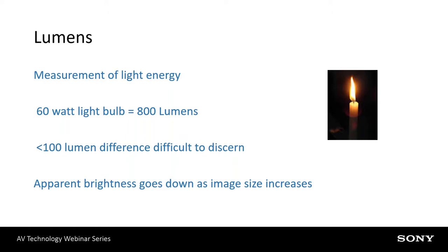Something to keep in mind when deciding what's the right projector: typically speaking, a human eye can't discern less than a 100 lumen difference. So if I show you a projector that is 5,000 lumens and then one that is 5,100, more than likely you wouldn't see the difference. Also, apparent brightness — what the viewer sees — will change based on screen size. If I have a 5,000 lumen projector on a 120-inch diagonal screen and then show you the same projector on a 200-inch screen, it's going to look a lot dimmer because I'm spreading the same amount of energy over a larger area.